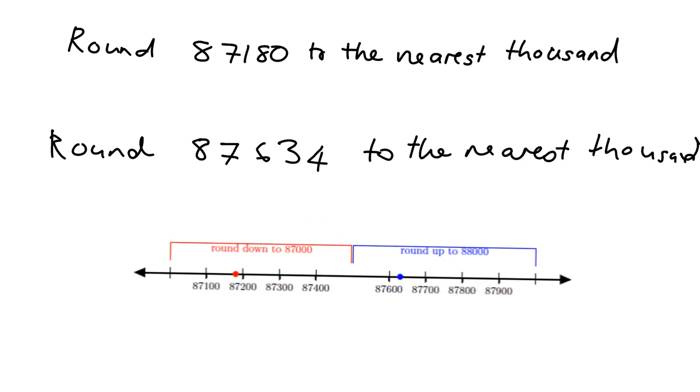If we're asked to round 87,180 to the nearest 1,000, we're asking what 1,000 is closest to 87,180. Let's think about what the 1,000s are: 1,000, 2,000, 3,000, 4,000, 5,000, 6,000, and so on. If you carried on counting up in thousands like that, the one you'd get to before 87,180 is 87,000, and the one after is 88,000.